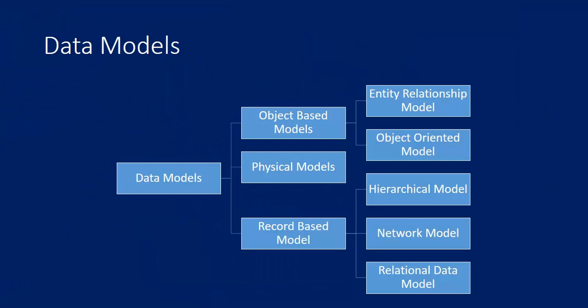There are different kinds of data models; based on our requirement we choose one of them, sometimes multiple. Fundamentally, we divide them into three groups: object-based data model, where data is treated as an object; physical model, where data is stored physically; and record-based model, where data is treated as a record.